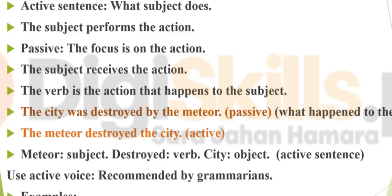For example: The city was destroyed by the meteor. So the city is the subject receiving the action. What happened to the city? The city was destroyed. The destruction action is what the subject is receiving in the passive sentence.